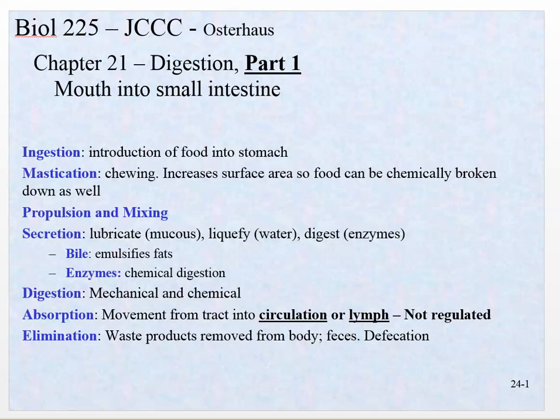I want to quickly go through two parts. This is the digestive system — mainly chapter 21. It's divided into two sections because we're going to get through about the small intestine. We're going to work our way through the mouth and then down and more or less out of the small intestine.